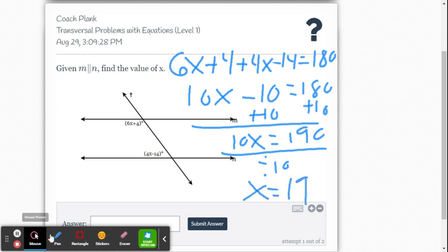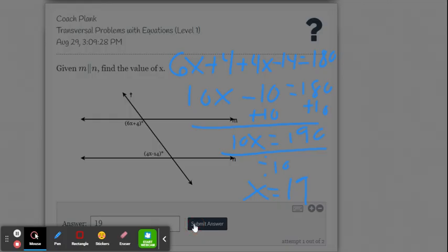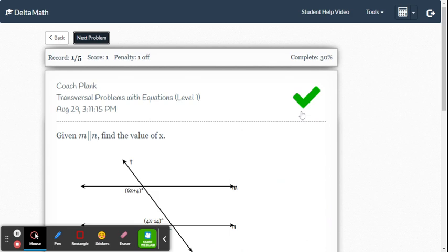So let's check to see if we got it right. Submit. We got it right. And they're all that way. So it's all based on the relationship, write the algebraic equation, and then solve for x. That's all there is to it.